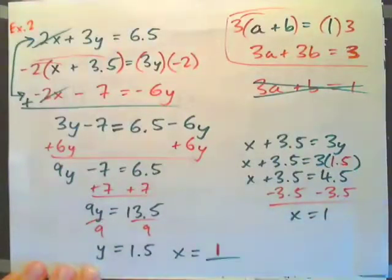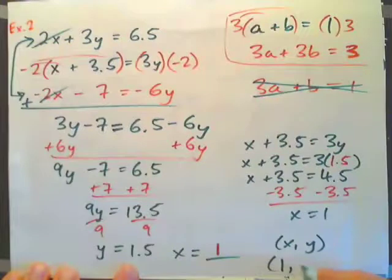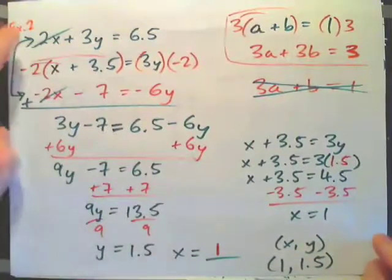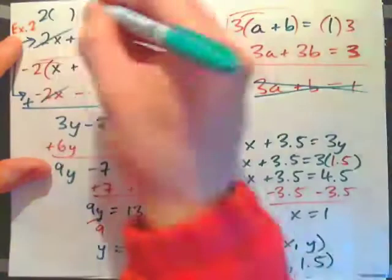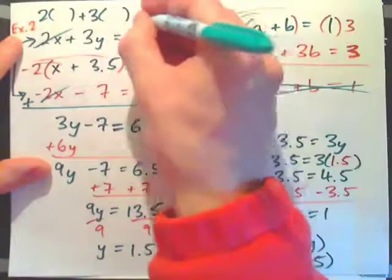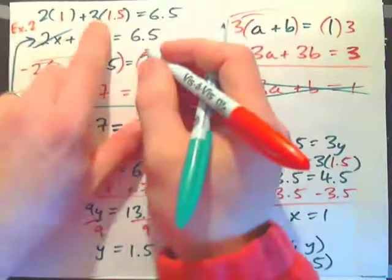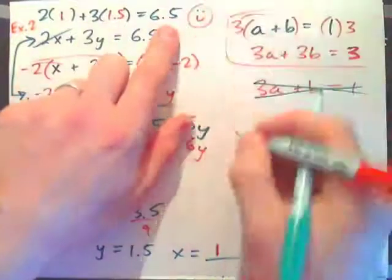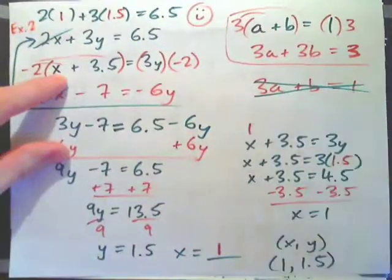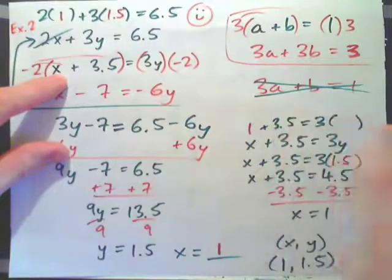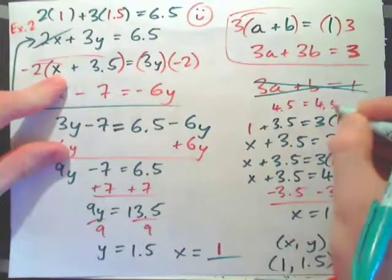So y is 1.5 and x is 1. As an ordered pair (x, y), that's (1, 1.5). Check in both equations: 2 times 1 plus 3 times 1.5 equals 2 plus 4.5 equals 6.5 — that works. And for the bottom equation: 1 plus 3.5 should equal 3 times 1.5, giving 4.5 equals 4.5 — that works out also.